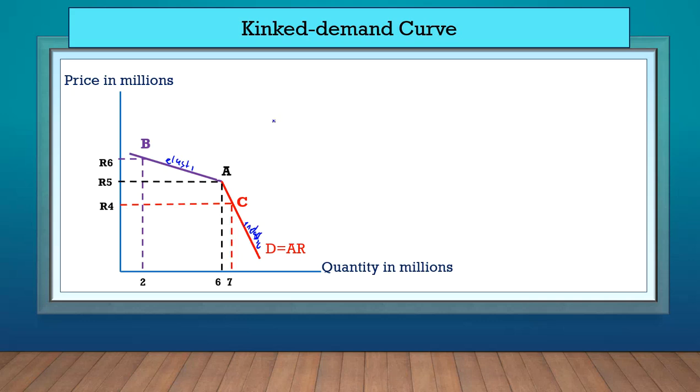So the demand curve also shows us why it is unwise for any firm to change the price. All oligopoly firms should operate at this equilibrium position at point A when the price is 5 rands for the quantity of 6 million.